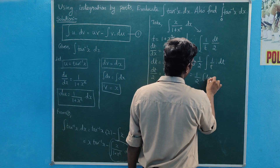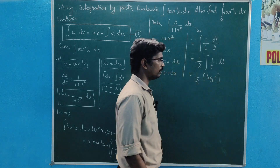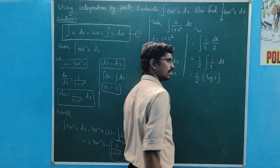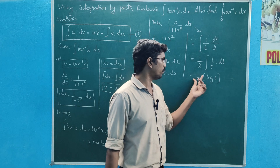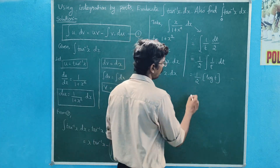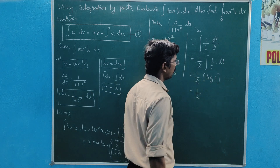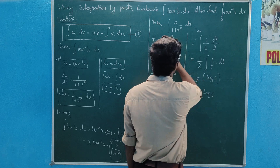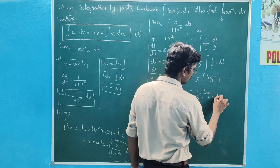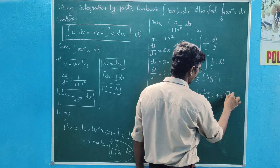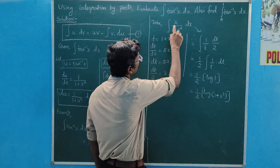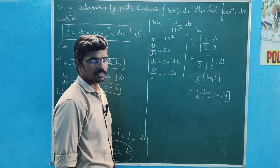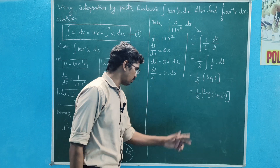Integral of 1 by t gives log t plus c. So the last answer is 1 by 2 log t, which equals 1 by 2 log(1 plus x square). So the result is 1 by 2 log(1 plus x square) plus c.